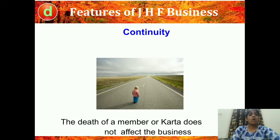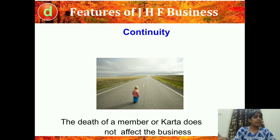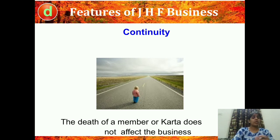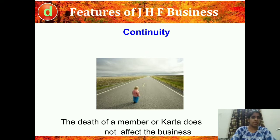The fourth feature is continuity — the death of a member or the Kartha does not affect the business. In sole proprietorship, if the proprietor dies the business ends, but here if the Kartha dies, the next eldest member of the family becomes the Kartha. The business will still continue; after the person has died, other members are still members and everything goes on the same way.